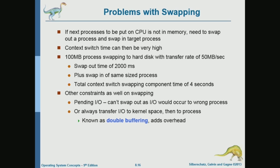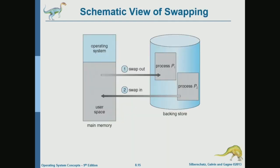Regarding swapping out process one to run process two: the system will have to use a process that is inactive in order to swap it out. It will take into account if the process is waiting for IO — if it's waiting for IO and data becomes available later, the system will try to copy that data to process memory, so it wants to make sure the process is still in memory. There are some considerations the system will take into account before selecting a process for swapping out.